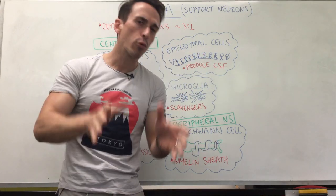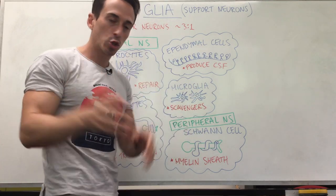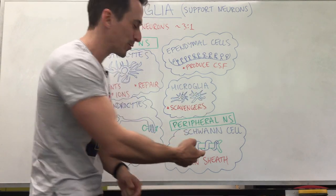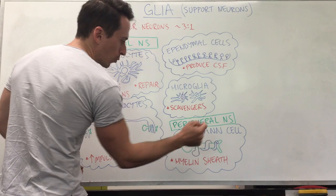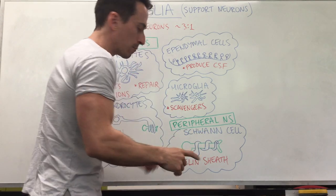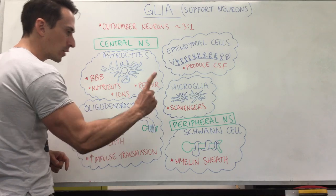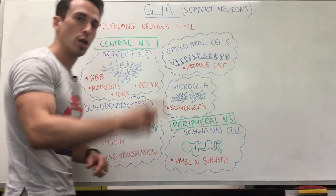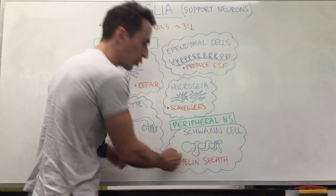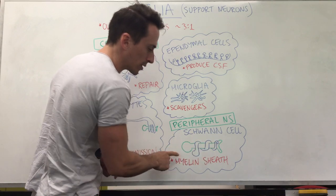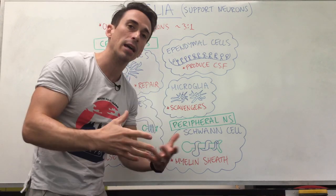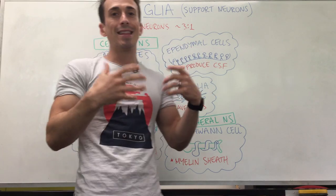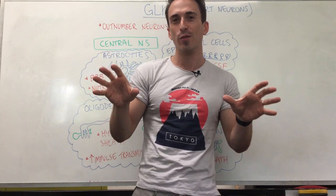The one type of glial cell you should know for the peripheral nervous system is the Schwann cell. Schwann cells are the oligodendrocyte equivalent within the peripheral nervous system — so they form the myelin sheath. But the difference is this: a single oligodendrocyte can create myelin sheaths around multiple neurons, whereas only one Schwann cell can wrap a single neuron. One Schwann cell wraps only a single axon. The myelin sheath is still there as insulation, allowing for an appropriate electrical signal to be sent. These are the types of glia you'll find in the central and peripheral nervous system.